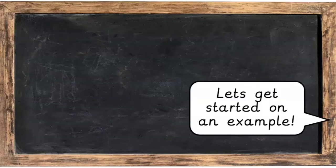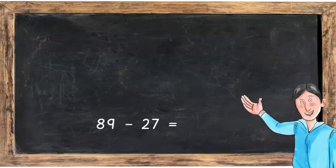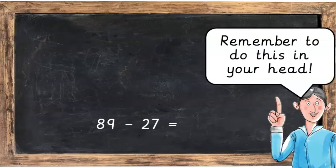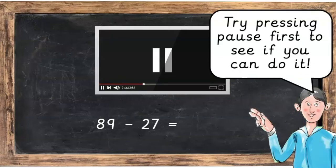Let's get started on an example. So here we've got 89 take away 27. Remember to do this in your head. Try pressing pause first to see if you can do it.